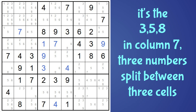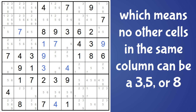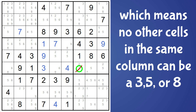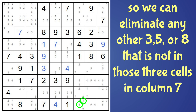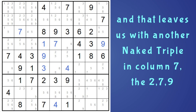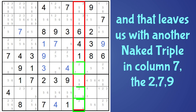It's the three, five, eight. These three cells have only a three, five, and eight, so those three numbers have to be split between those three cells. Therefore no other cells in column seven can be a three, five, or an eight. So we can eliminate this five here, and this three here, and this three and five here, leaving us with another naked triplet in column seven — the two, seven, and nine — but there's nothing we can do with that.